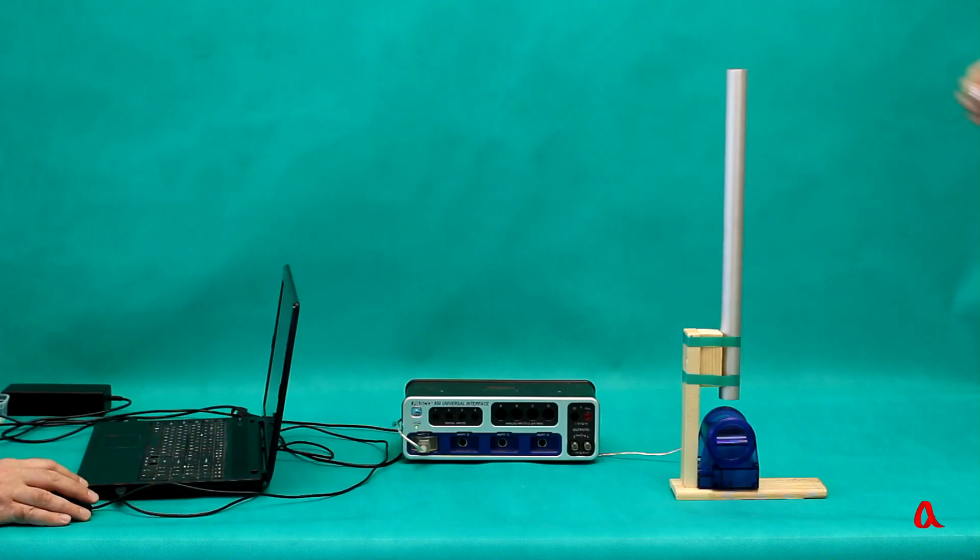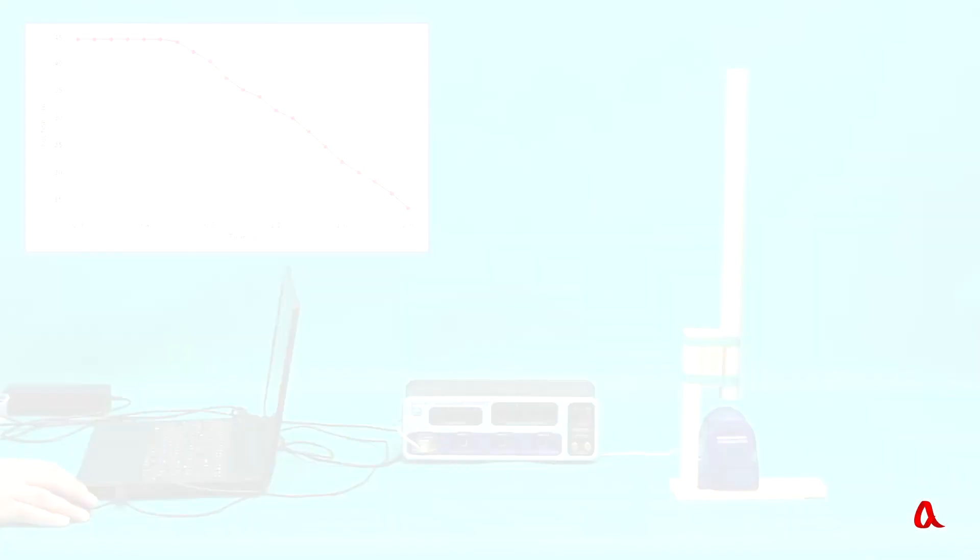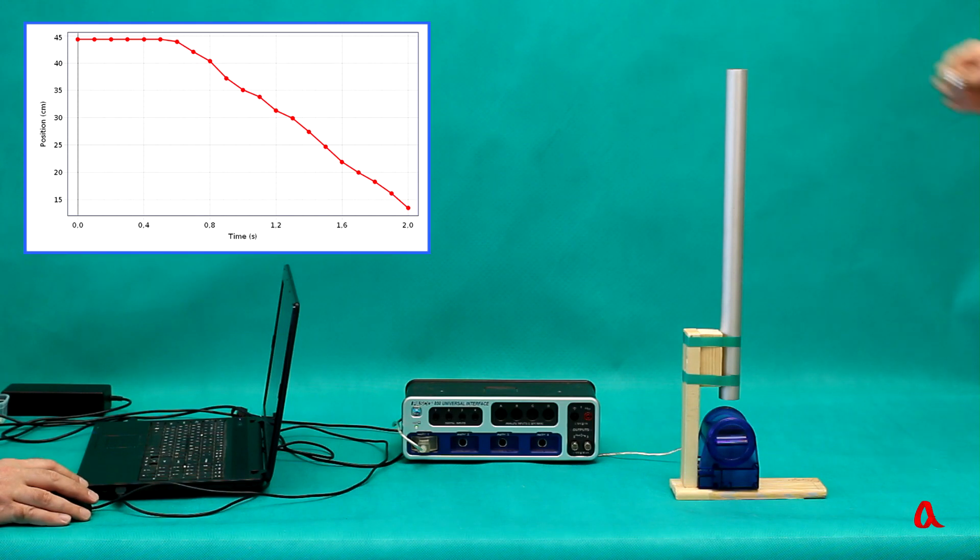Let's track the position of the magnet over time using an ultrasonic displacement sensor. You can see that the magnet is moving inside the tube at a constant speed. This means that the sum of the forces acting on it is zero.